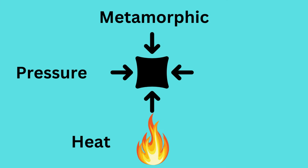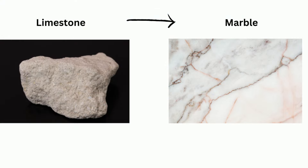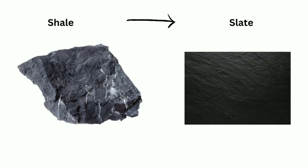Metamorphic rocks are formed when existing rocks are subjected to high temperature and pressure. The temperature isn't hot enough to melt the rock completely into a liquid, but hot enough, along with the pressure, to create new rocks. Marble is a metamorphic rock created from limestone, and slate comes from shale or mud rock.